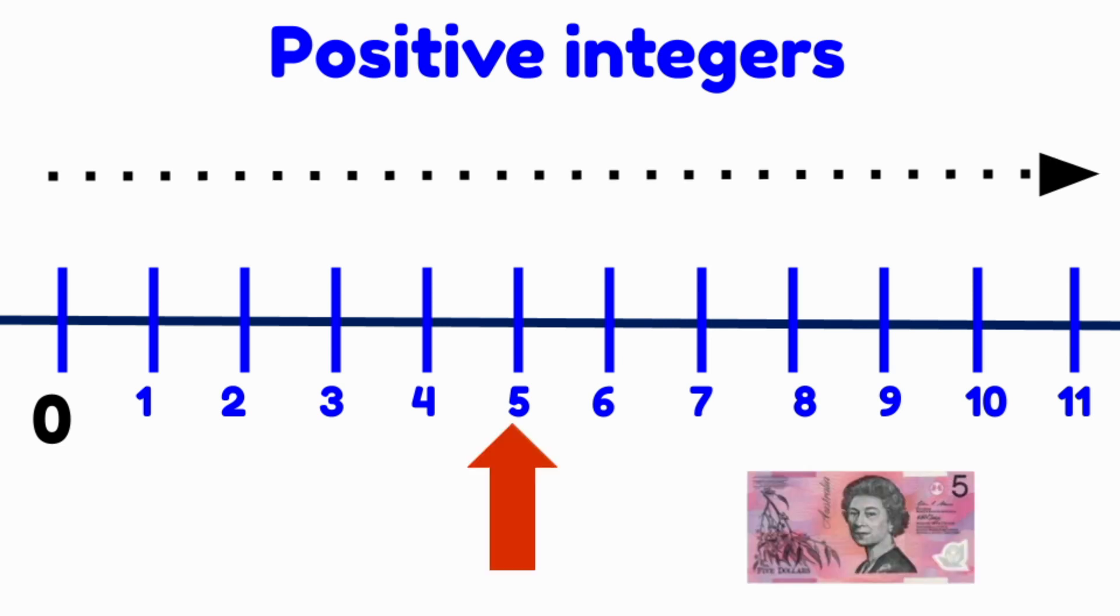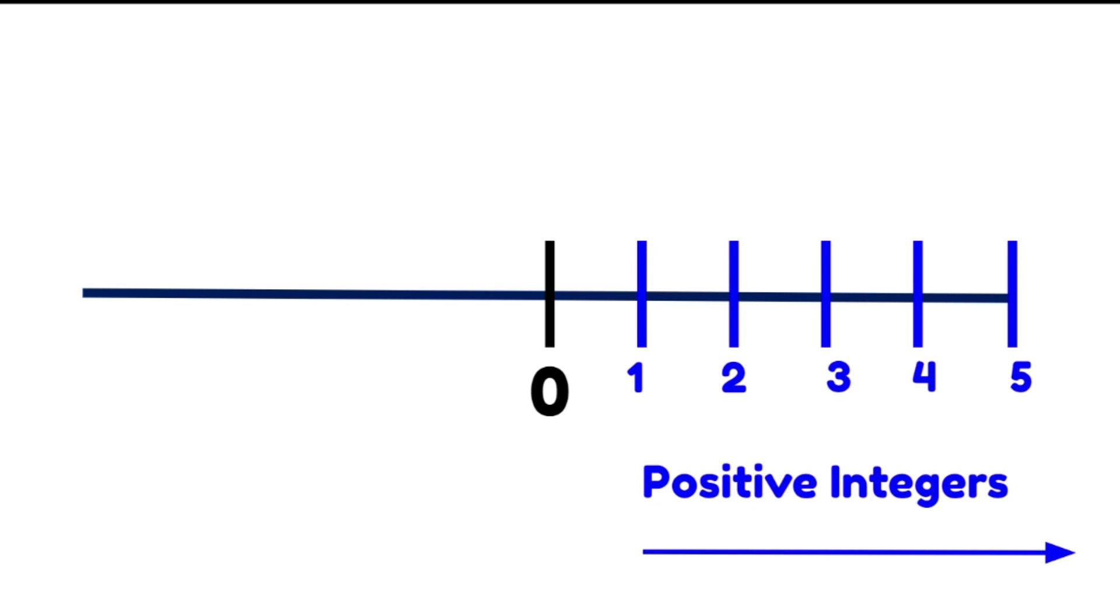For example, how much do you have in your wallet? We might have five dollars. This is a positive number, but there are more numbers that sit to the left of the zero. These are our negative numbers and are the opposite of our positive numbers.